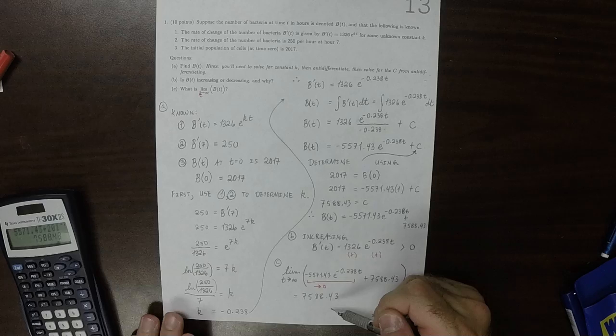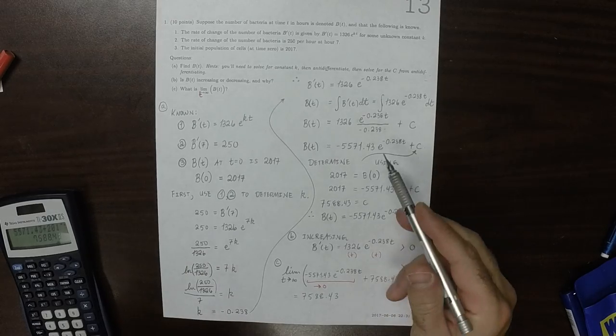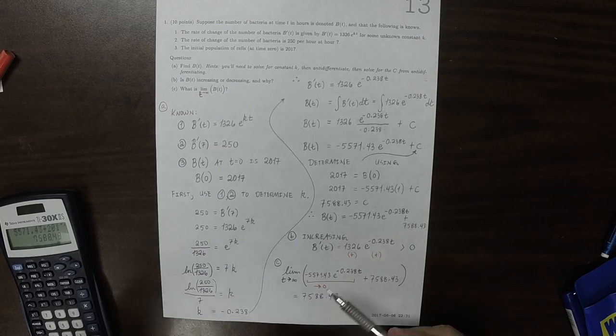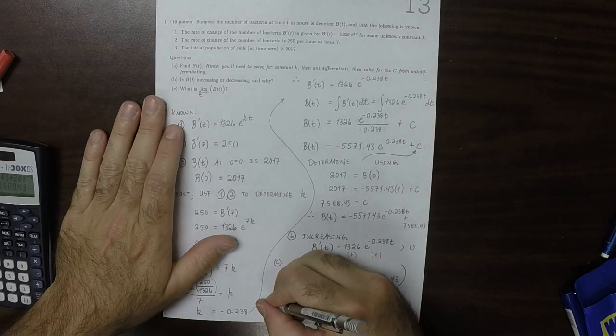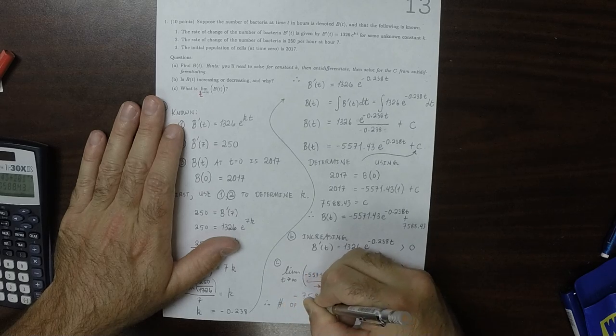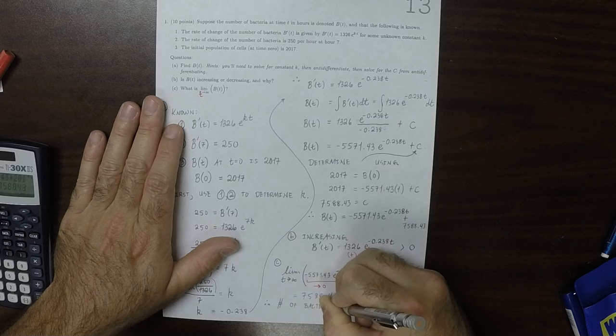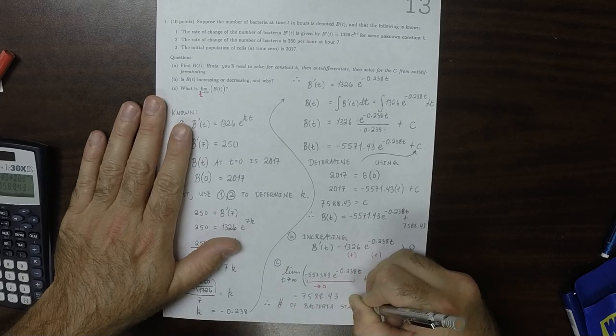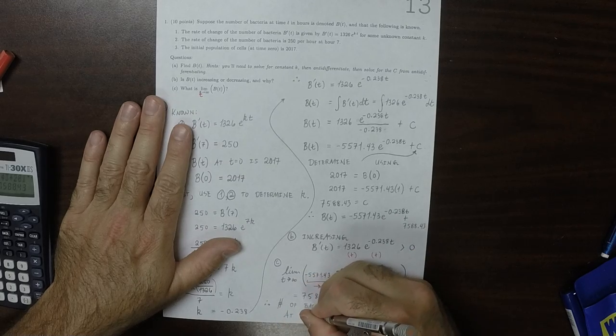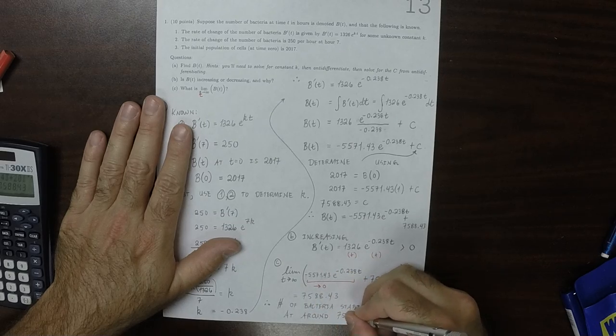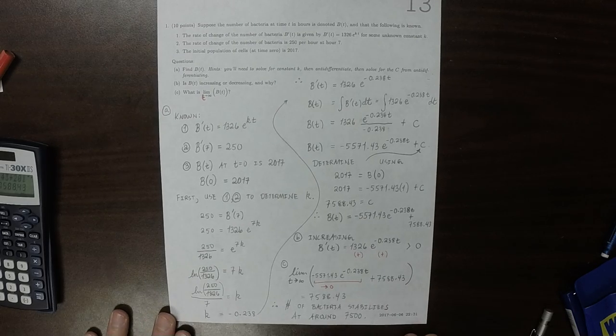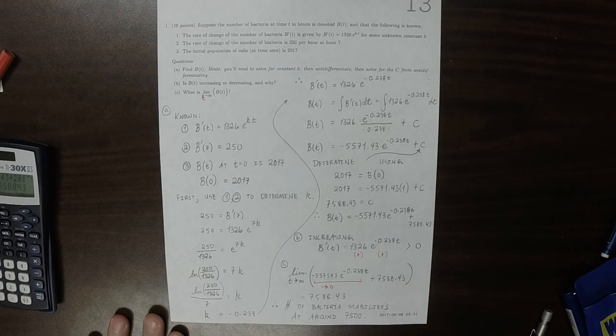So the way to interpret this is saying that the number of bacteria as time gets large is going to stabilize at that value. So therefore the number of bacteria stabilizes at around 7,500, so that means that the bacteria have reached equilibrium with their environment.